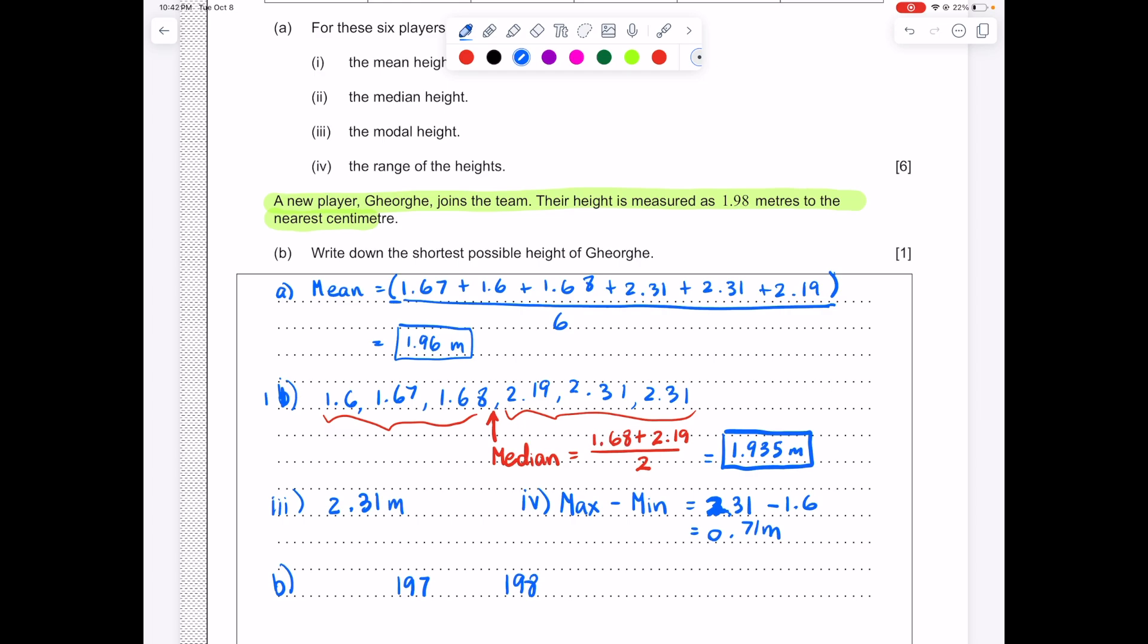But 1.971, 1.972, 3 or 4 does not round up. The smallest number that rounds up to 1.98 is 1.975. So that is what we're looking for and that is our answer. Make sure you indicate clearly that that is the answer we're looking for.